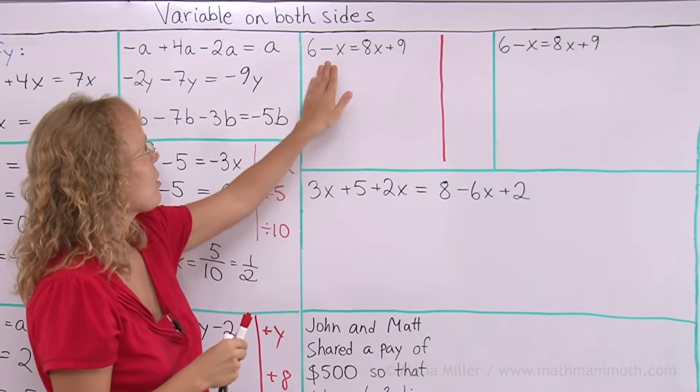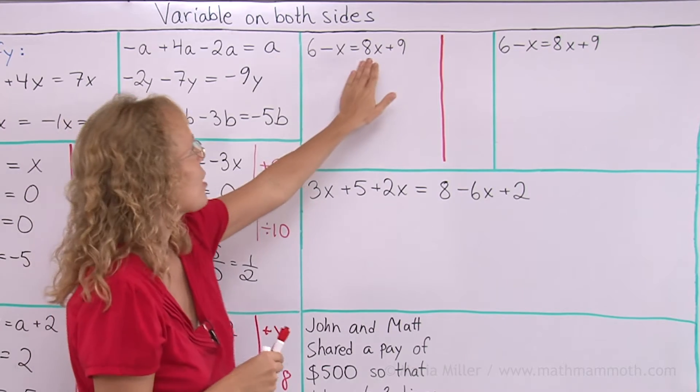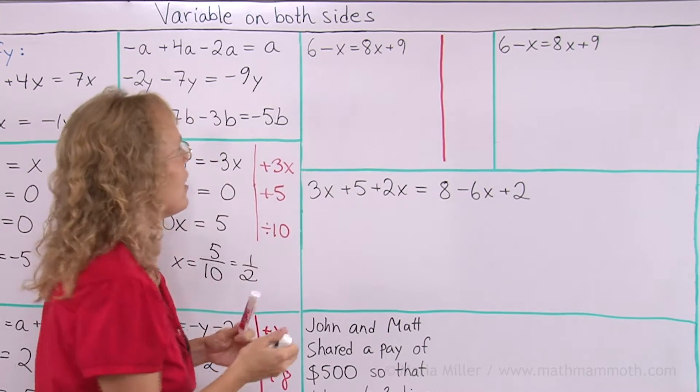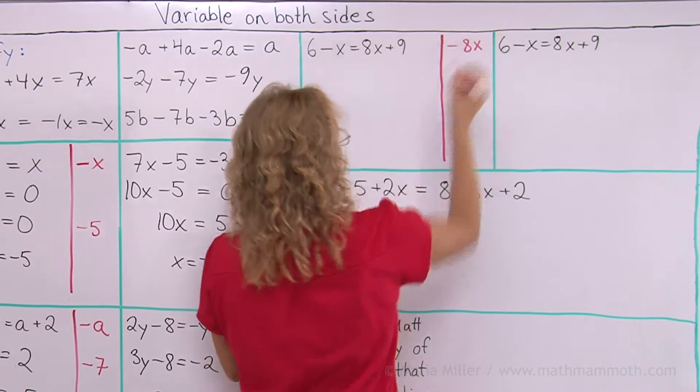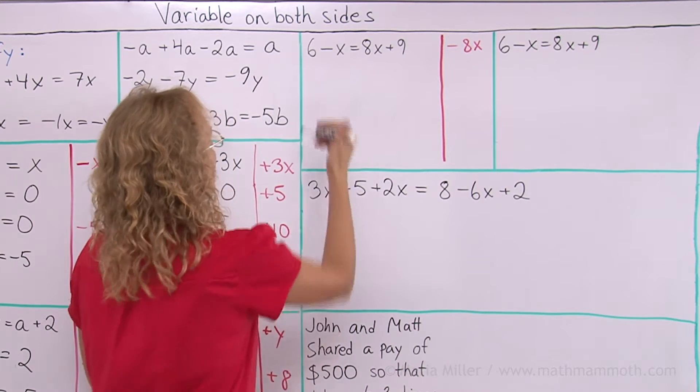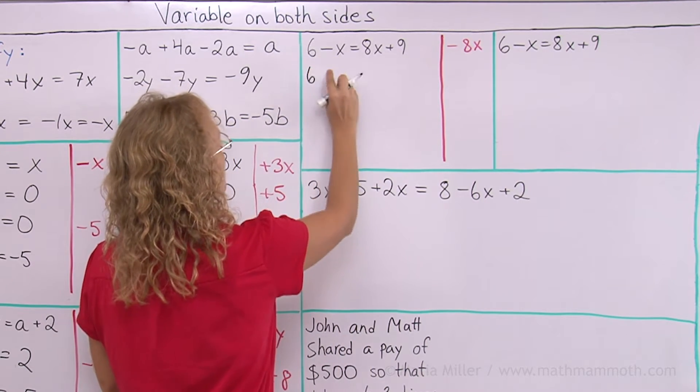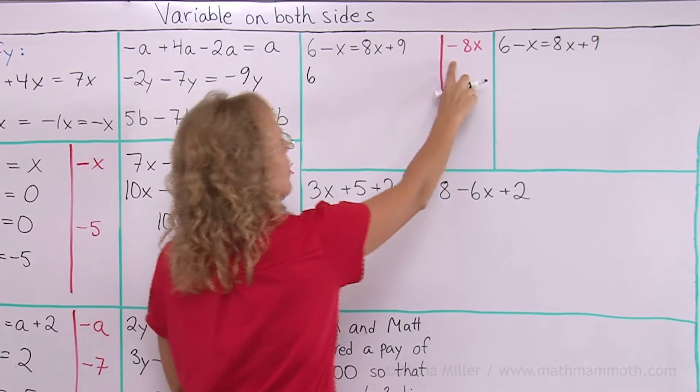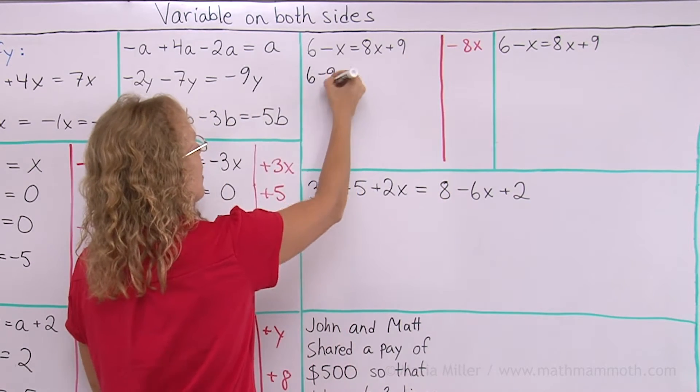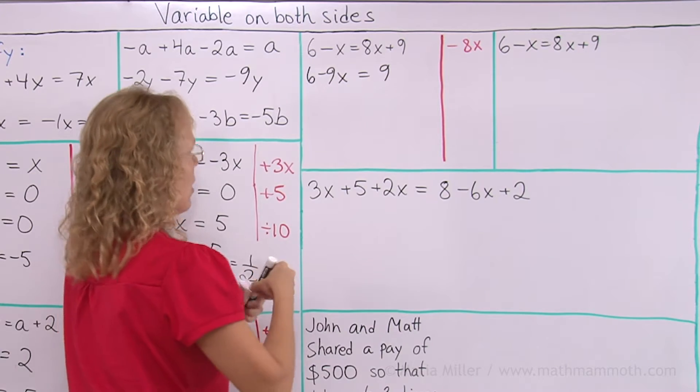First of all, if I'm just going to leave negative x here, if I'm going to get rid of this 8x, then I have to subtract 8x from both sides, and then that leaves 6, and then here's minus x minus 8x, so minus 9x, and then here is just 9 alone now.